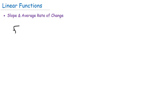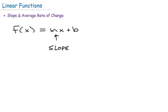A linear function has this format: f of x equals mx plus b, where m represents the slope or rate at which the line is changing. So our slope m is multiplied by our input x, and then plus b. B gives us, if you were to graph this, the y-intercept — where your graph touches the y-axis. So the y-intercept would be x equals 0, and whatever b is, that's where you'll hit the y-axis.